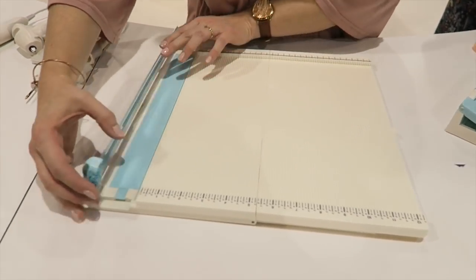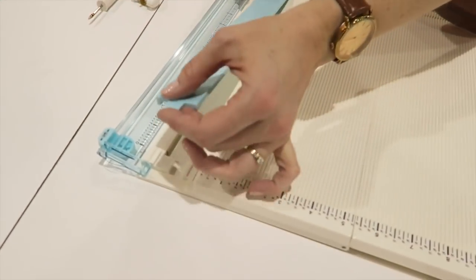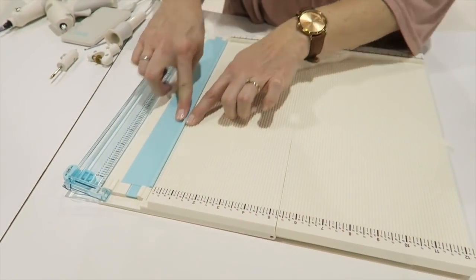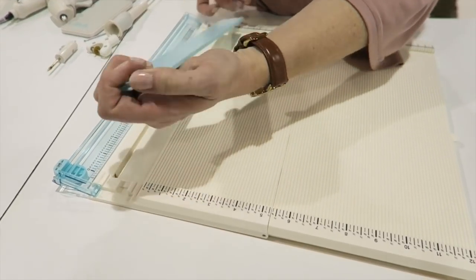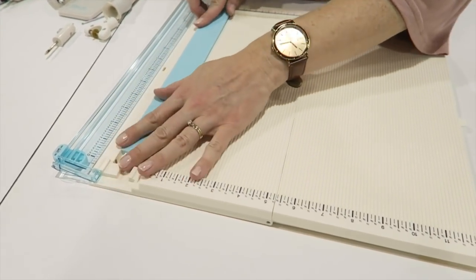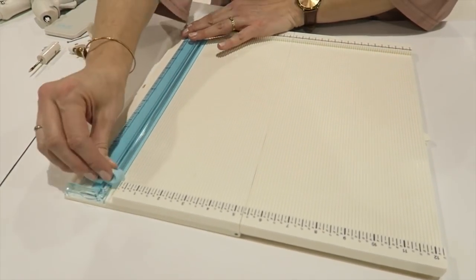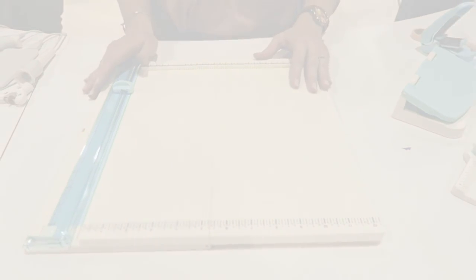And then also this is easy to flip over so if you wanted to score, you just line your paper up against the guide. And when you want to trim, you just flip that over and place it there. And then you can trim and this is sturdy and it won't bend as you're trimming.